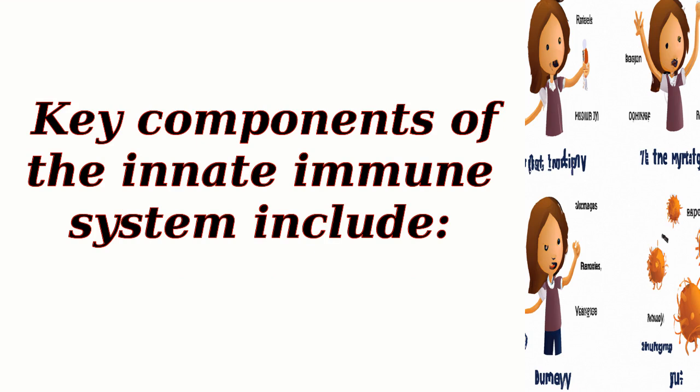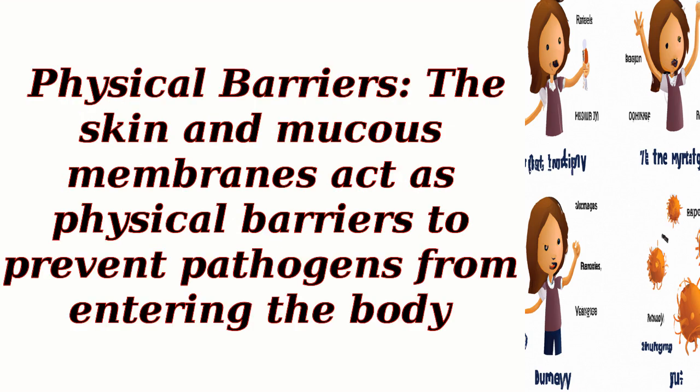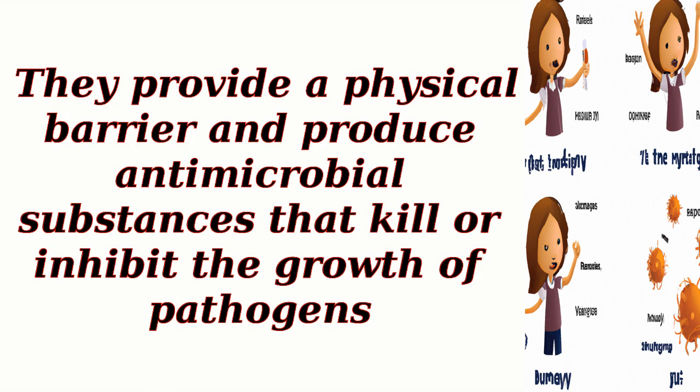Key components of the innate immune system include physical barriers. The skin and mucous membranes act as physical barriers to prevent pathogens from entering the body. They provide a physical barrier and produce antimicrobial substances that kill or inhibit the growth of pathogens.